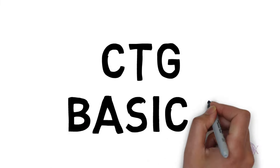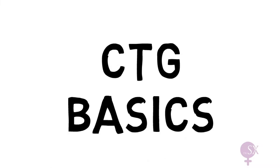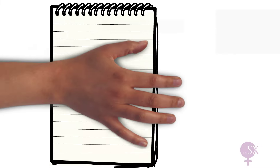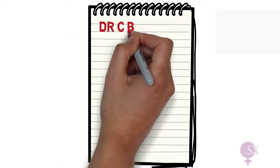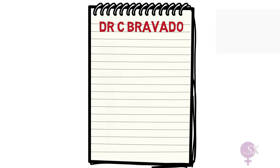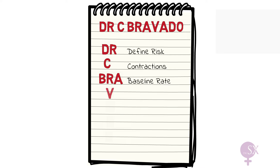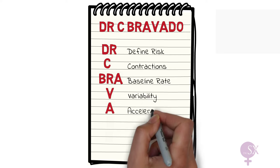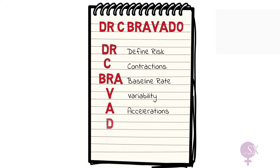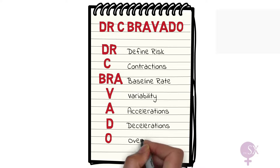We're back with our discussion on CTGs. In my previous video, we discussed how to interpret a CTG using the mnemonic Dr. C. Bravado. As a quick recap, we have: defined risk, contractions, baseline rate, variability, accelerations, decelerations, and overall assessment. If you've forgotten this, take a look at my previous video.